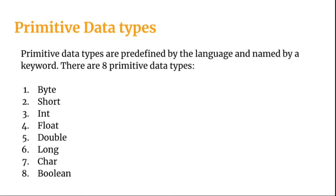Let's talk about primitive data types. A primitive data type is predefined by the language and named by a keyword. In total, there are eight primitive data types: byte, short, int, float, double, long, char and boolean.